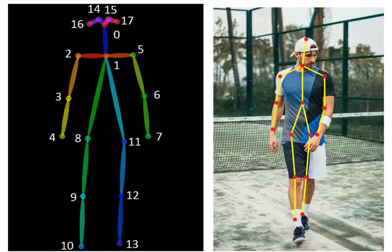Hey everyone, welcome back. Today we will discuss one more interesting topic from the last few videos — we have been discussing about computer vision, and this time it's one more application from computer vision itself. It's called human pose estimation. It's a very important problem in computer vision. Imagine we are able to track different points on the human body — we can create a mechanical model in the computer itself, and we can do this in real time, estimating or tracking 18 different points on the human body.